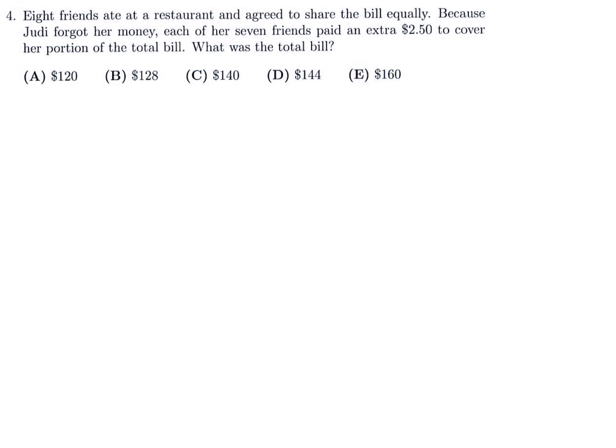8 friends ate at a restaurant and agreed to share the bill equally. Because Judy forgot her money, each of her 7 friends paid an extra $2.50 to cover her portion of the total bill. What was the total bill? There are 8 friends sharing equally, so each pays X over 8. Since Judy can't contribute, the remaining 7 friends each add an additional $2.50.